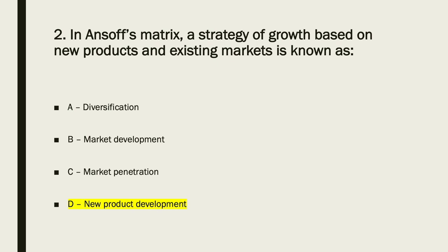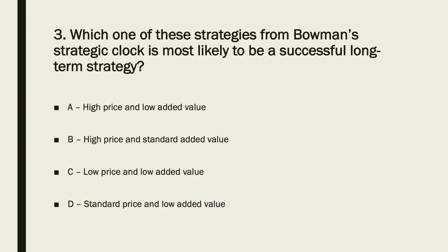Let's move on to question three. Which one of these strategies from Bowman's strategic clock is most likely to be a successful long-term strategy? The answer is low price and also low added value, which means the answer is C.